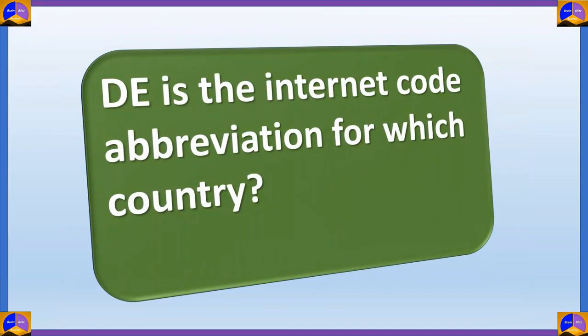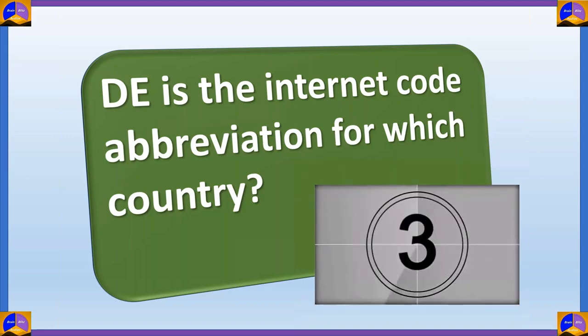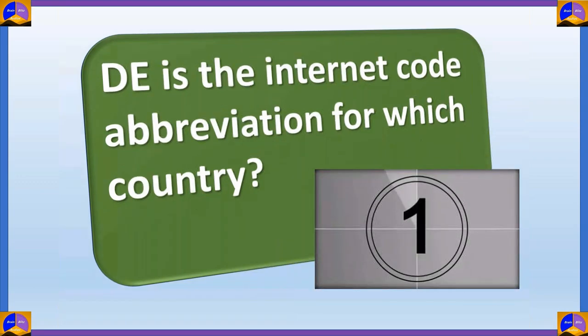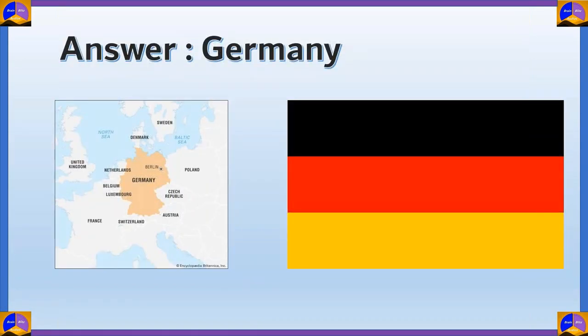This is the next question. DE is the internet code abbreviation for which country? Your time starts now. The answer is Germany.